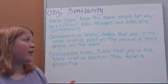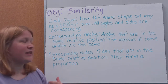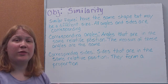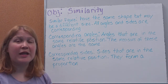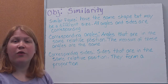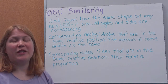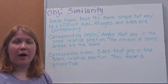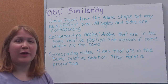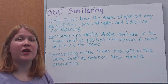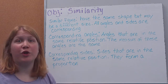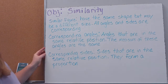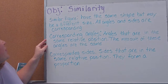Corresponding sides means they're the sides that are in the same relative position. Now these are not going to be congruent, but they're going to form a proportion, which means we can solve for unknowns in similar figures because we know that their sides are proportional. So make sure that you get all those definitions down.